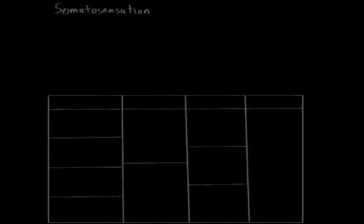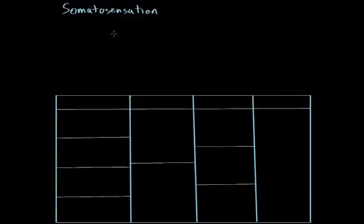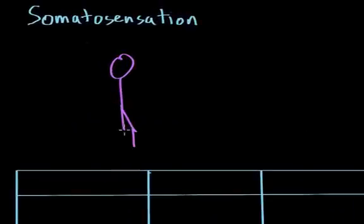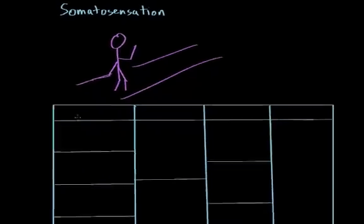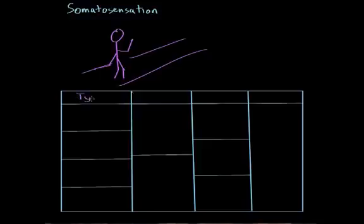In this video we're going to talk about somatosensation. If we have someone walking down the street, he's receiving all kinds of information from the world around him — different types of sensations. He's also receiving information about different intensities of these sensations: is it really hot outside, is it kind of hot outside? So he's receiving information about the intensity of the different sensations.